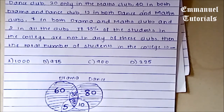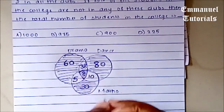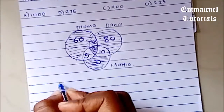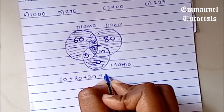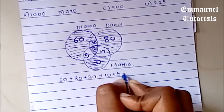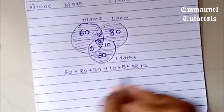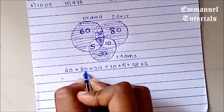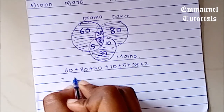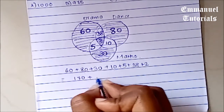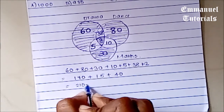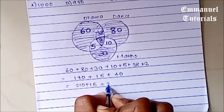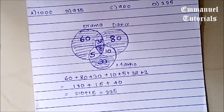The total number of students participating in these clubs is: 60 plus 80 plus 30 plus 10 plus 5 plus 38 plus 2. That works out as: 60 plus 80 is 140, plus 30 is 170, plus 15 plus 38 plus 2 is 40, giving 210 plus 15, which equals 225. So the total number of students in these clubs is 225.